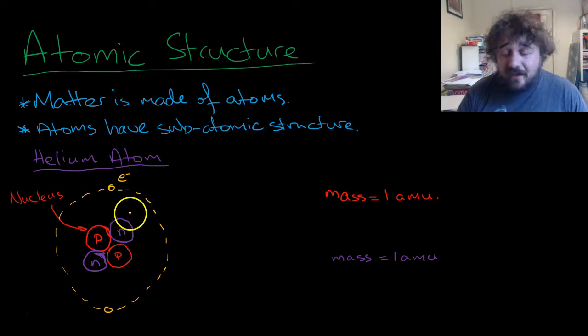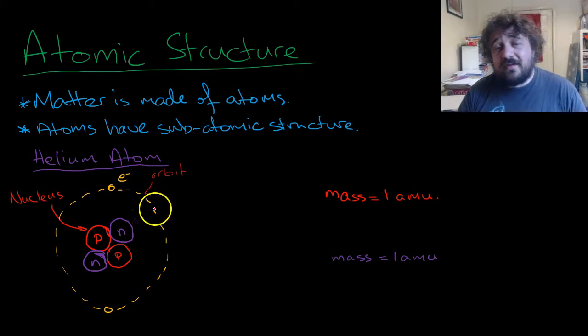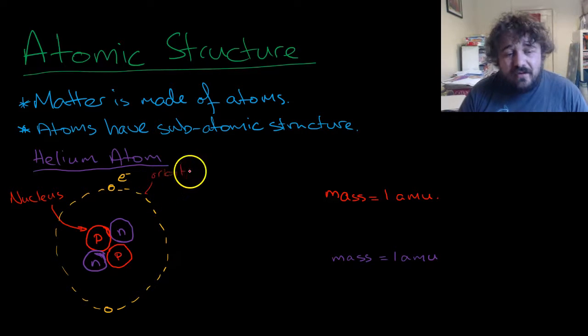Now this middle section is what we refer to as the nucleus. And this outer section here is what we would call the orbits. Shells is another thing that that would be called. So that's the electron shell or the electron orbit.